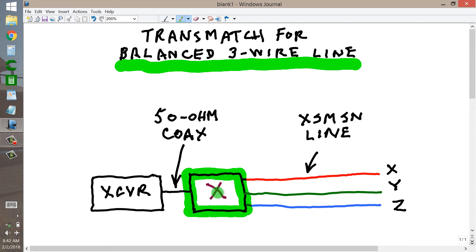The transmatch may be tunable if it's broad-banded, or even for a single band, you'd probably have to adjust certain controls to optimize its response. The trick is getting this 50-ohm single-ended unbalanced line interfaced to this 3-wire balanced transmission line.